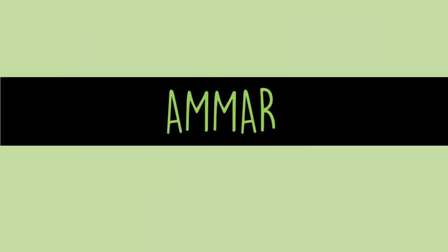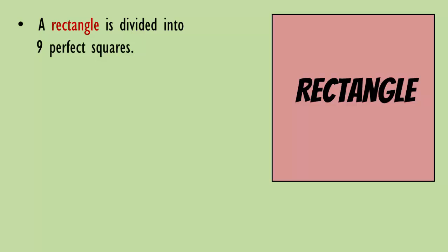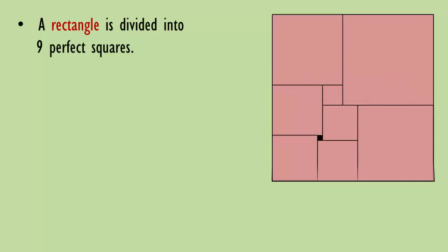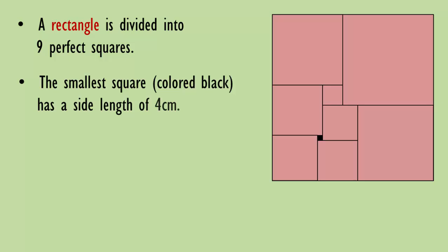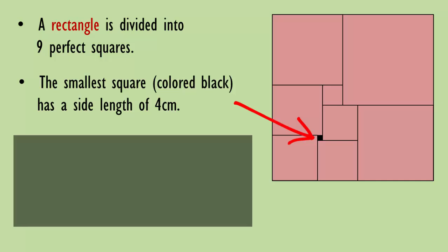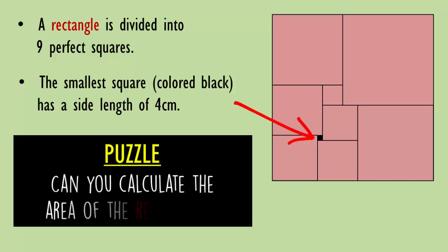What's up logical people, this is Ammar. A rectangle is divided into nine perfect squares. The smallest square, which is colored in black, has a side length of four centimeters. Can you calculate the area of the rectangle? Pause the video and think mathematically.